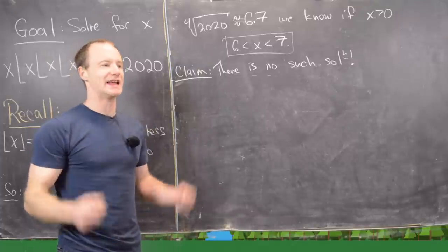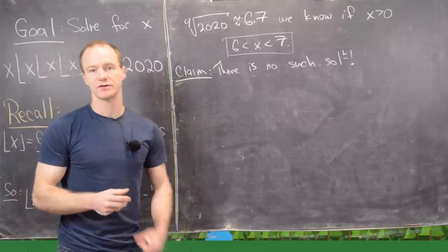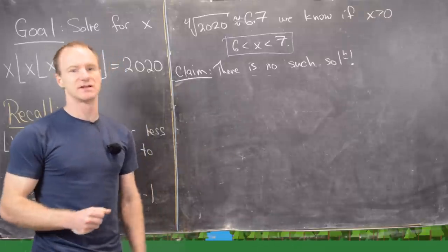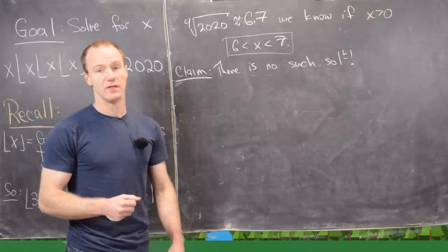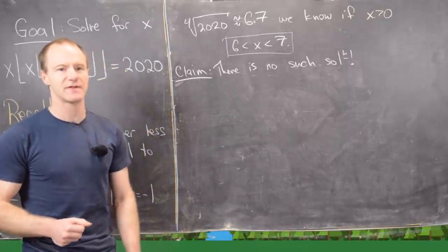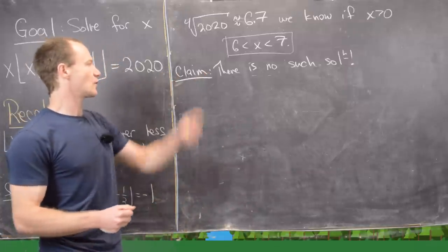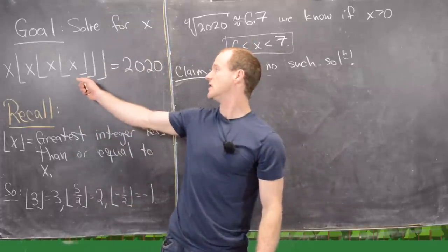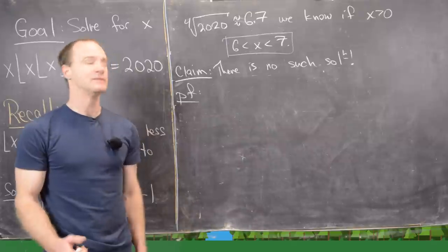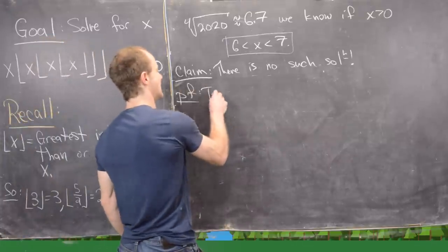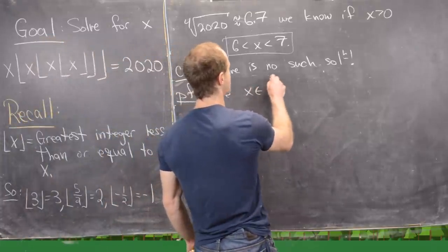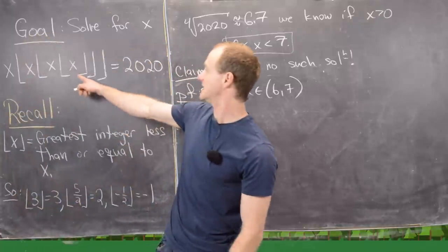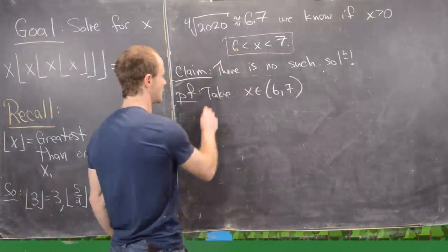We had an exhaustive argument that there is no positive solution: we obtained a list of all possible candidates and checked them — a computer search confirmed none work. But let me provide a more satisfying proof. We claim there are no positive numbers x such that x times the floor of x times the floor of x times the floor of x equals 2020. Take x strictly between 6 and 7.